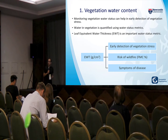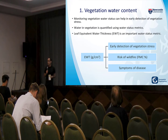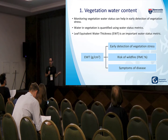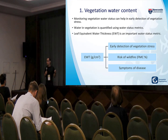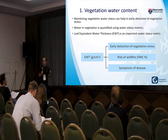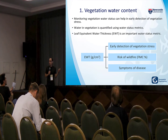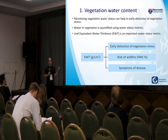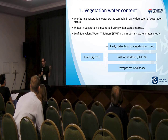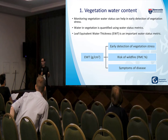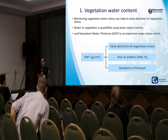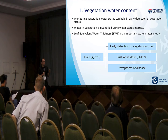First of all, we need to monitor the vegetation water status to determine the vegetation health. There are many water status metrics that we can use to quantify the water in vegetation. The most popular of them is equivalent water thickness, or EWT, mainly because it can be linked to reflectance in the spectral domain and estimated using remote sensing techniques.